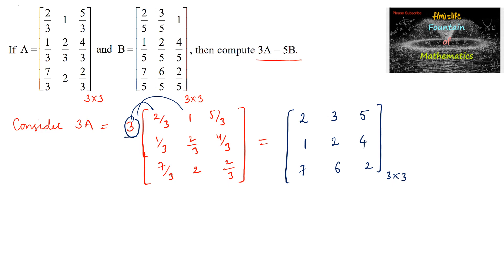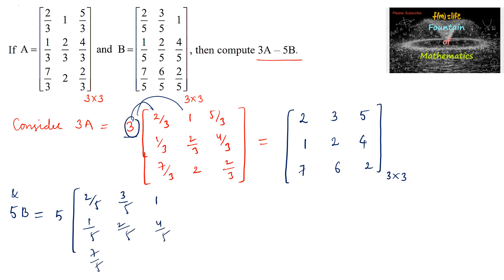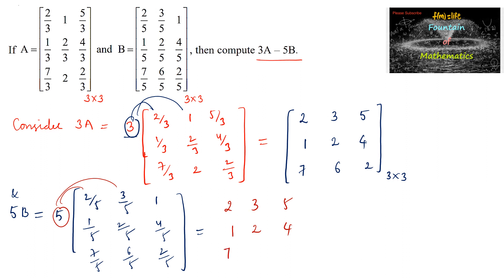Similarly, 5B equals 5 times matrix B. Multiplying the scalar 5 to each element: 5 × (2/5) = 2, 5 × (3/5) = 3, 5 × 1 = 5, 5 × (1/5) = 1, 5 × (2/5) = 2, 5 × (4/5) = 4, 5 × (7/5) = 7, 5 × (6/5) = 6, 5 × (2/5) = 2.